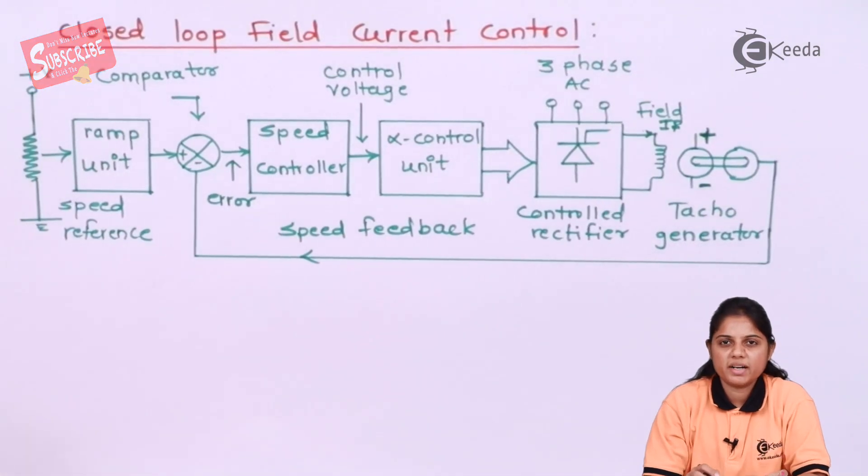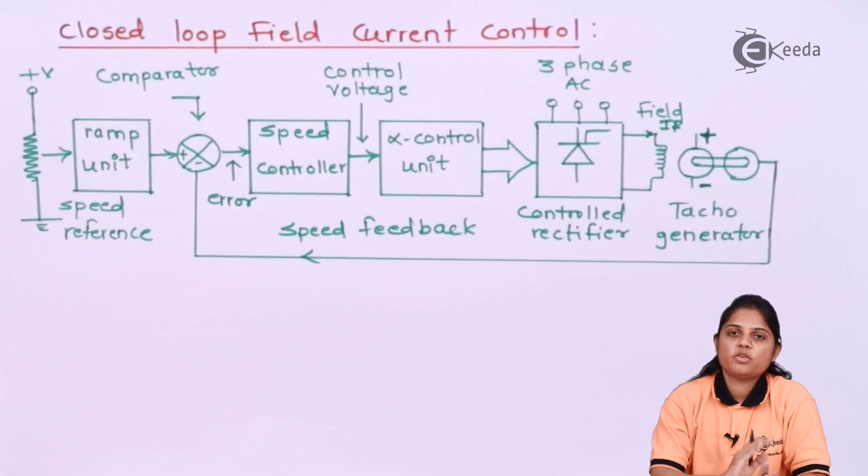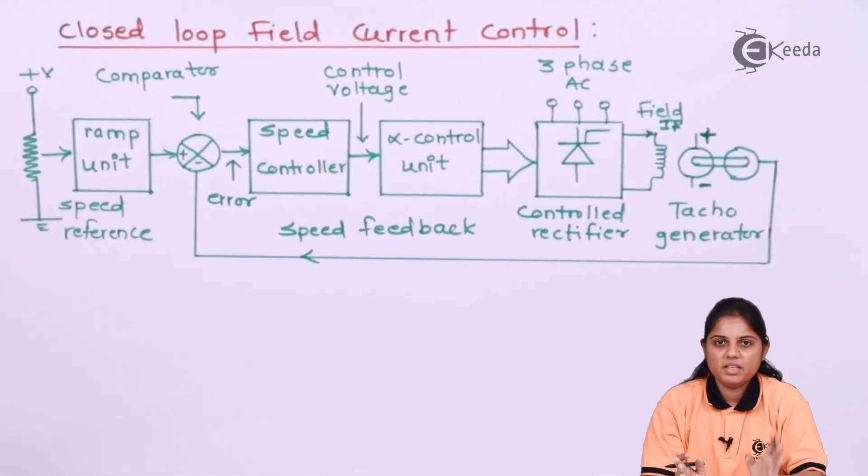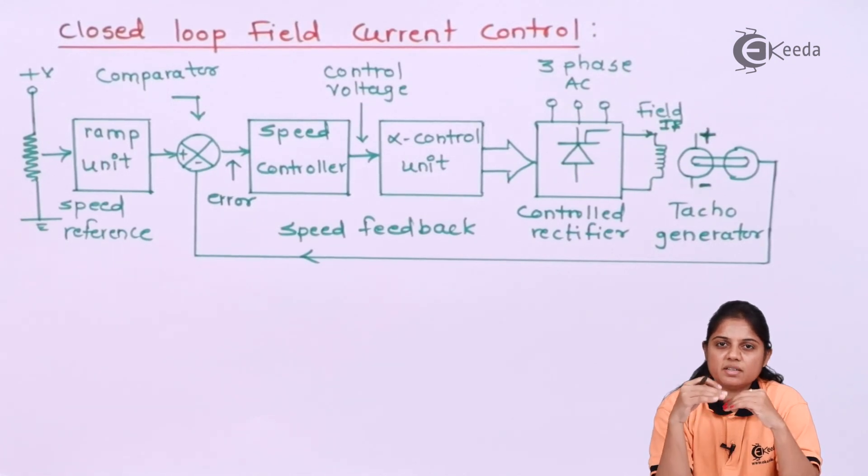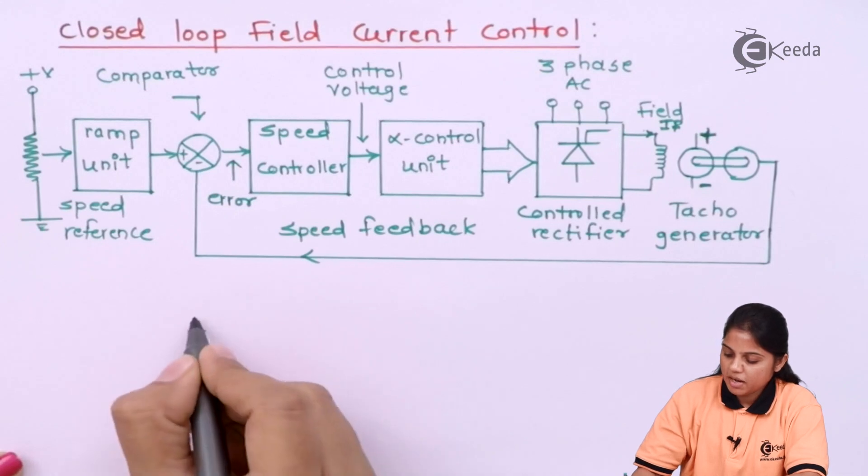Now, if you remember the characteristics, if you go on decreasing field current your speed will increase. That means they are inversely proportional with each other. If the current is decreasing, then your speed will increase with the decrease in torque. I will write the formula.